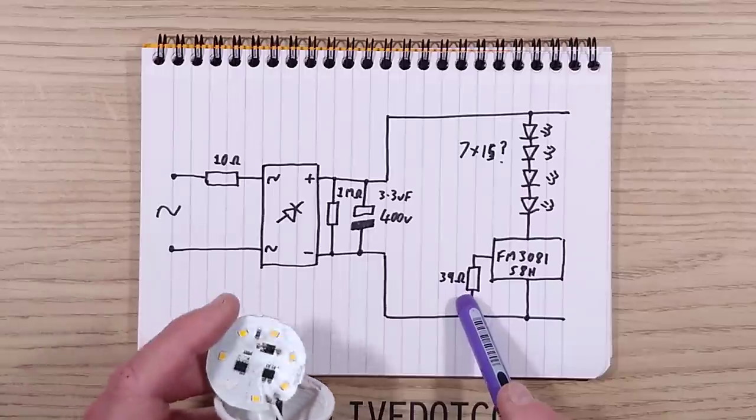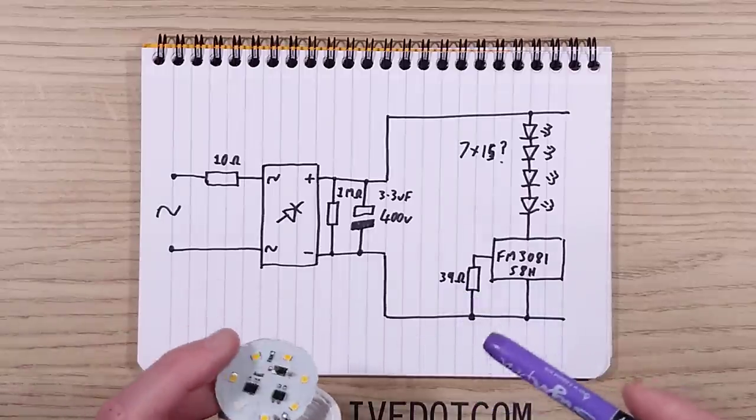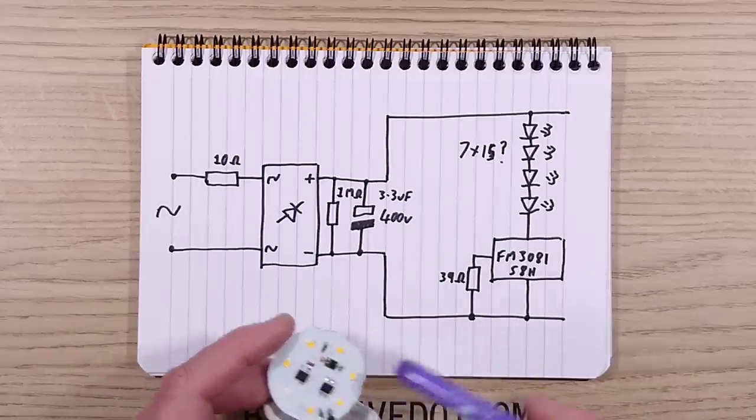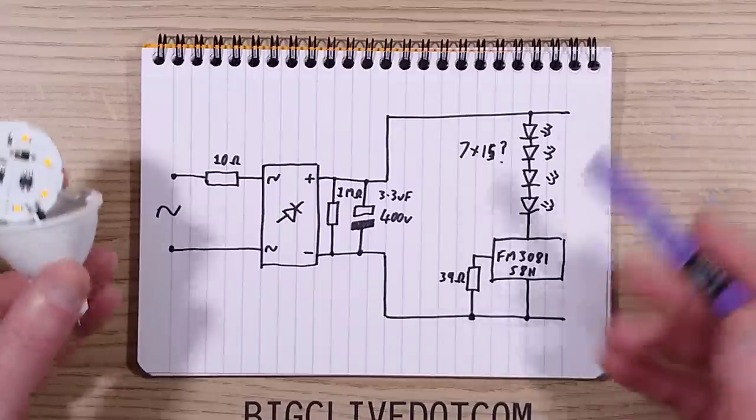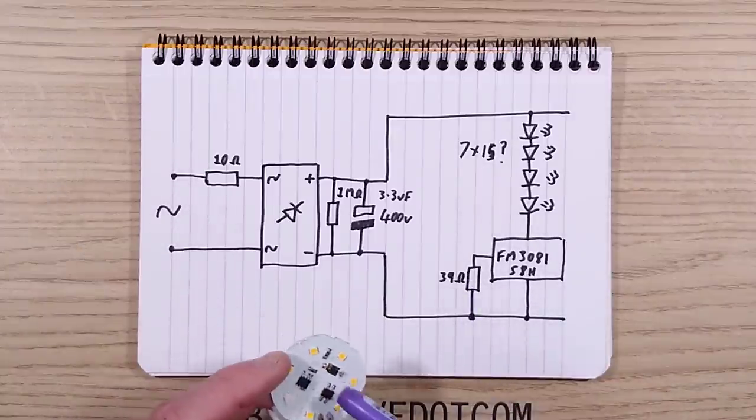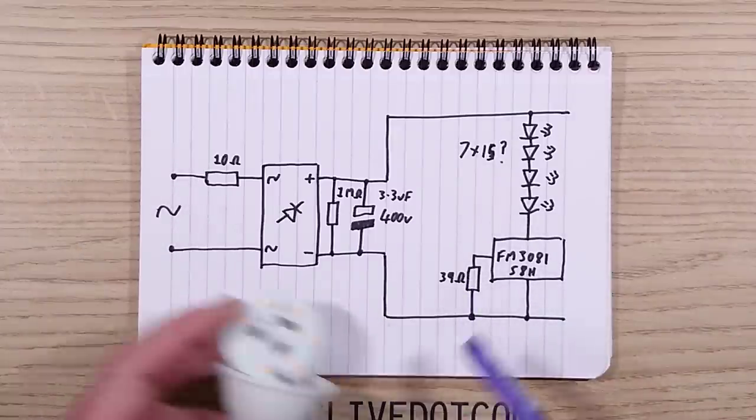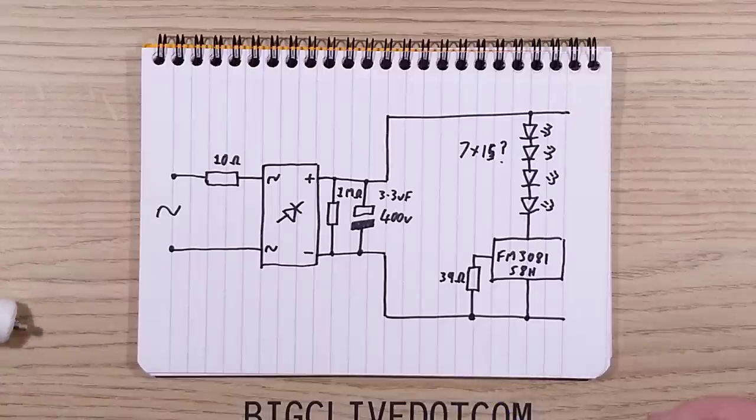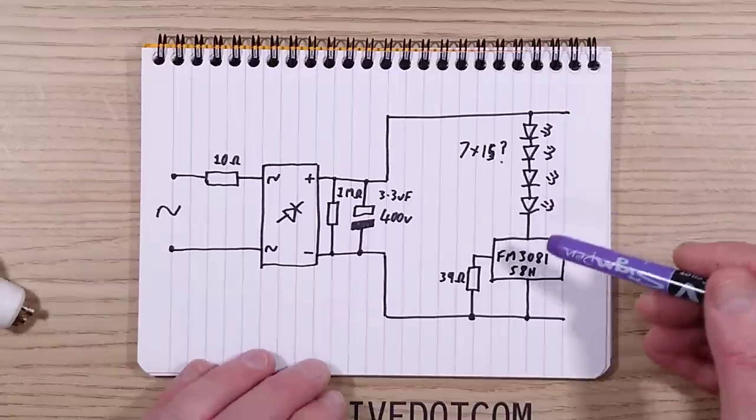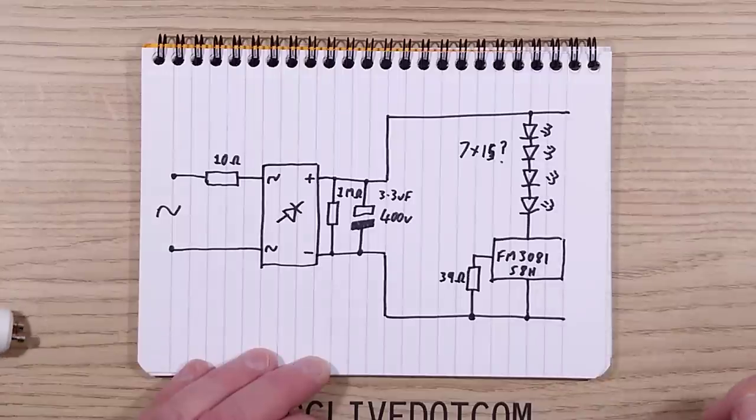And then we've got an FM3081-style linear current regulator, where you set the current through it by a 39 ohm resistor. Normally they have a couple of resistors in parallel, which is nice because it makes it easier to hack - you can just chop one of them off and it reduces the current. But in this case, you'd actually have to change this resistor here completely to change the rating of the lamp to lower it. Or if you wanted to, you could theoretically increase it, but the LEDs are already pushed to the very hilt.